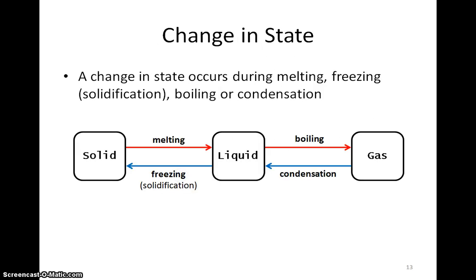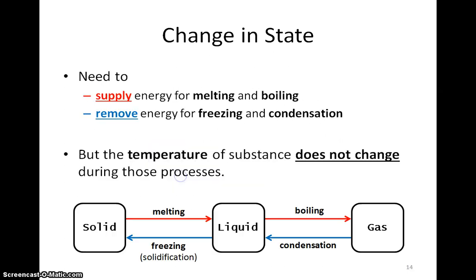Recall that there are three states of matter: solid, liquid, and gas. We can change the state of matter by heating or cooling it. We need to supply energy to the substance for melting and boiling to occur. Conversely, we need to remove energy from the substance for freezing and condensation to occur.